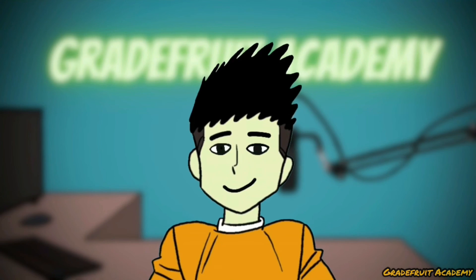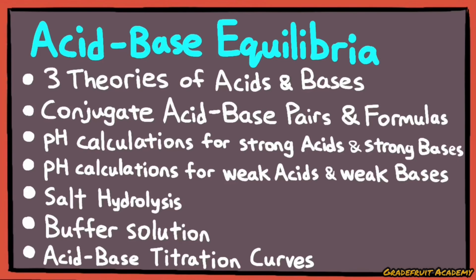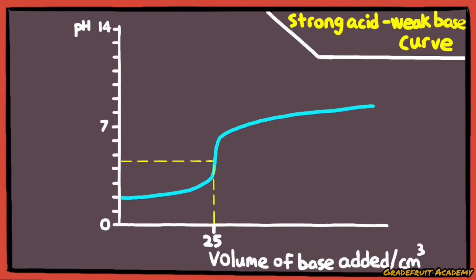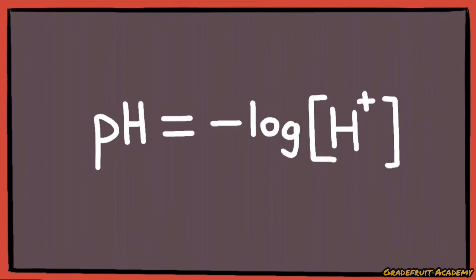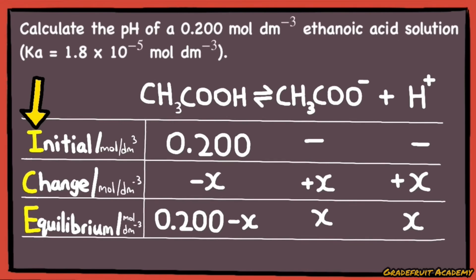The reason why I said that it's a combination of everything that we've covered is because we will be using the earlier parts of the chapter to calculate the pH at these four specific parts of the curve, which are, number one, the initial pH, which can be calculated using the formula pH equals to negative log concentration of H+ for strong acids, or using the ice table for weak acids.